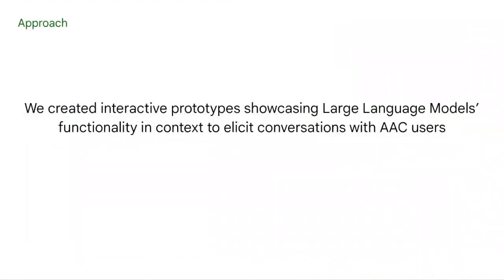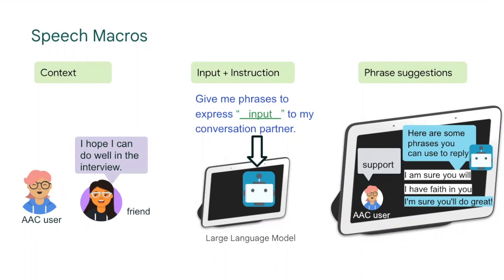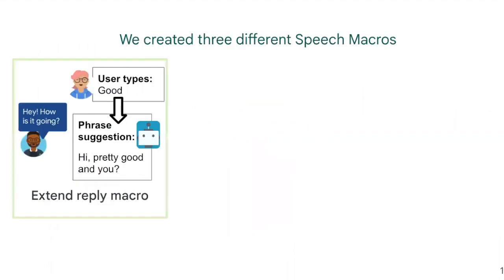To answer these questions, we created interactive prototypes showcasing large language model functionalities through different concepts, and we used these to elicit conversations with AAC users about large language models and their potential to support communication. After much iteration, we landed on the concept of speech macros as a tool to communicate large language model functionality to AAC users. Speech macros were designed to be purpose-driven shortcuts that can generate complete sentences from a brief user input, such as a single word, informed by prior work that uncovered challenges in AAC-based social interactions.